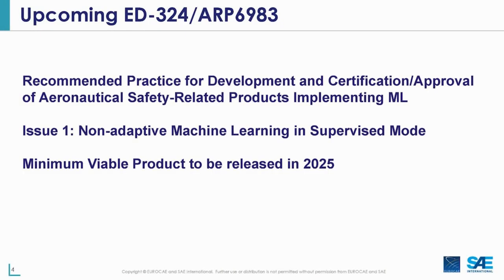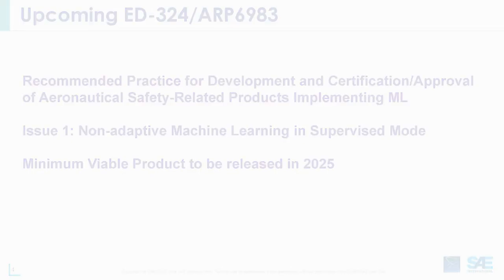For this reason, the first issue of the standard will only address supervised learning and only for systems of lower criticality, up to development assurance level C for airborne systems. This limitation does not mean that we preclude applications of higher criticality. In fact, we plan to address level B systems in the next release of the standard. Likewise, we are working to address reinforcement and unsupervised learning. These topics are excluded from the first issue only to make our minimum viable product quickly available to the industry. Work on future releases with extended scope will continue in parallel.